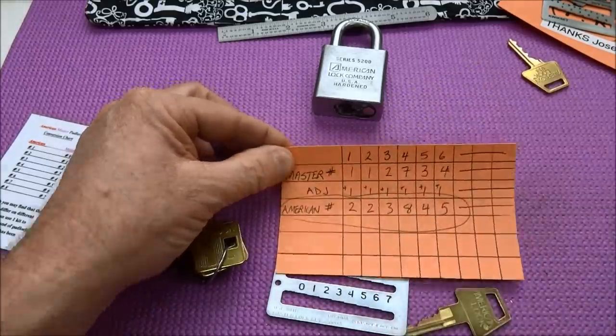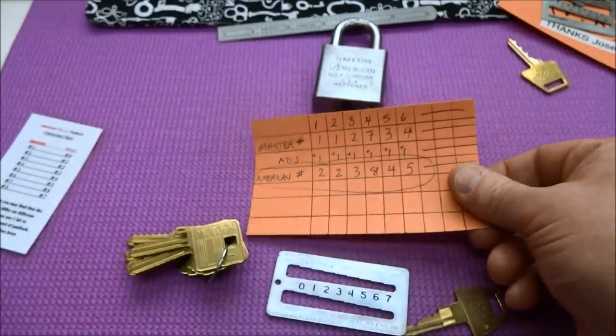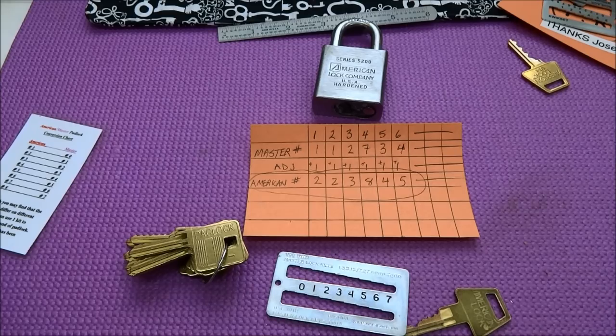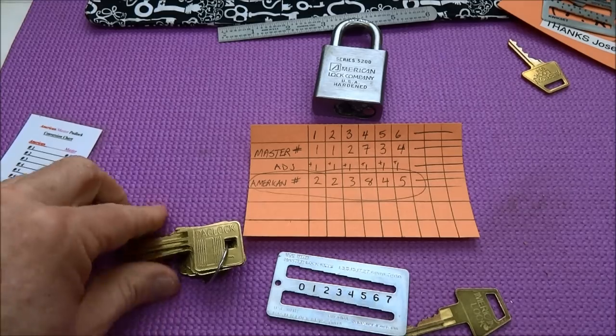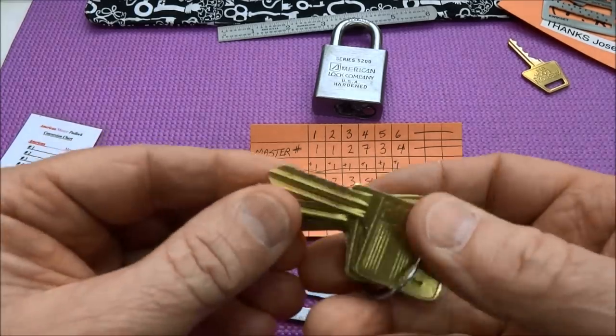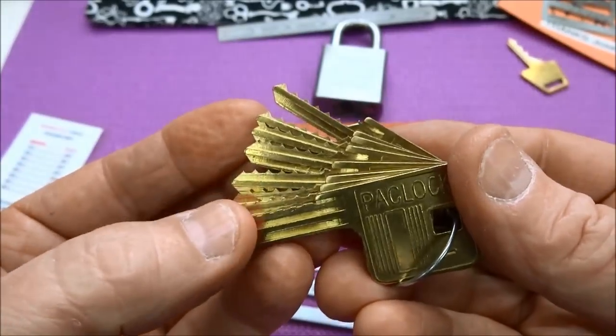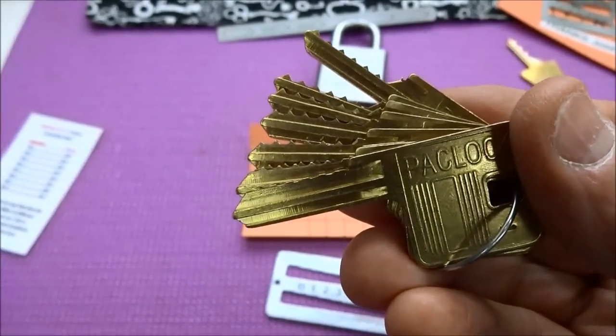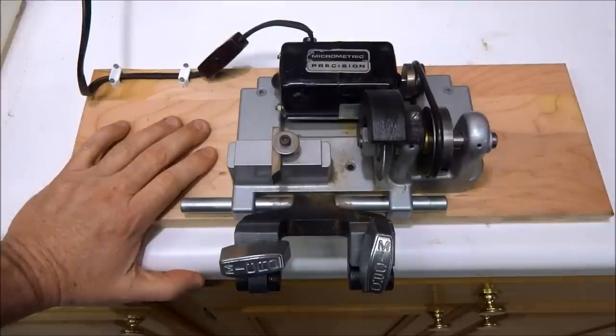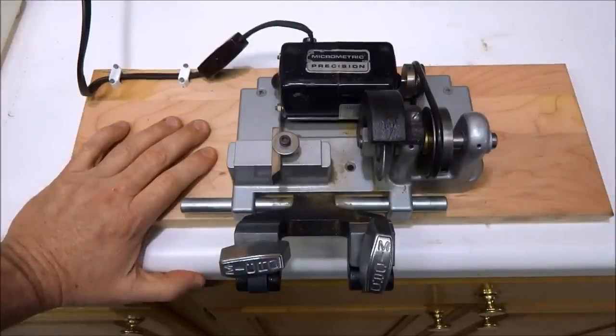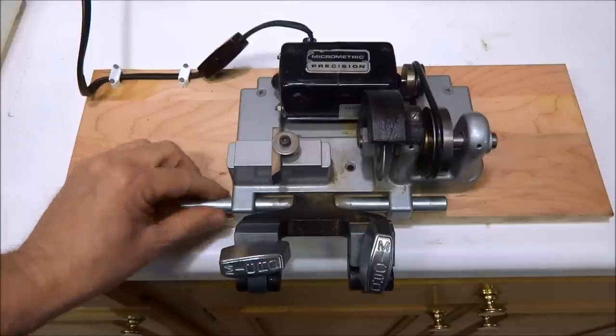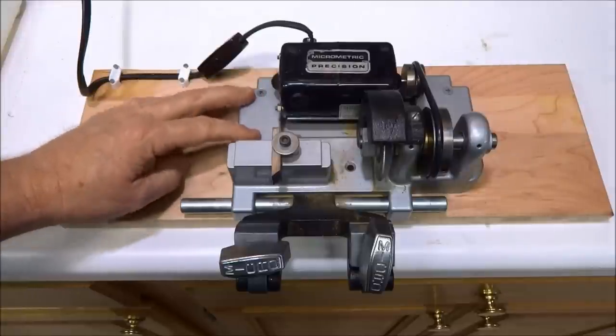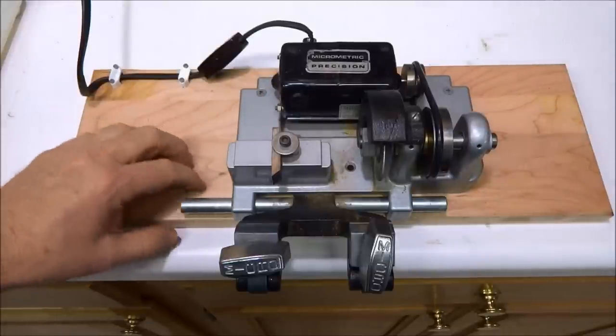Now how do we cut it? We're going to need a key duplicator or a key punch. We can't all afford code cutting machines because they cost many thousands of dollars, but on eBay you can get something like this. This cost me 40 bucks. All I had to do was clean it up and mount it on this piece of wood. It's driven by literally a thick rubber band and this is a sewing machine motor.